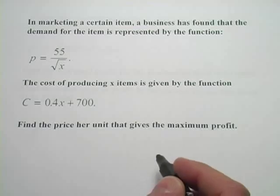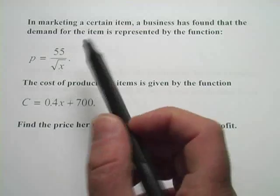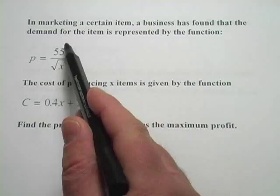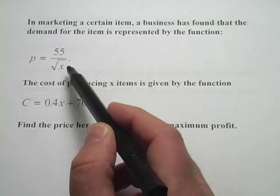In these problems, we are looking at some of the business applications of calculus. In this first one, it says that in marketing a certain item, a business has found that the demand for the item is represented by the function p equals 55 over the square root of x.